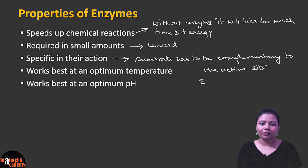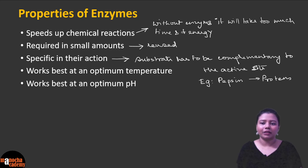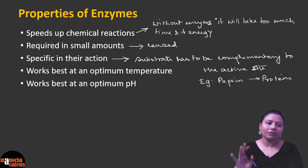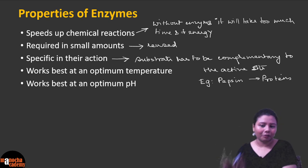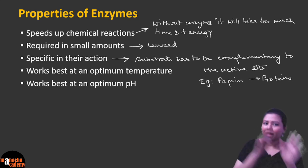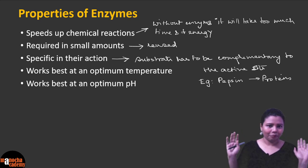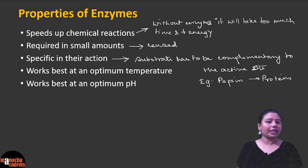For example, pepsin is a protein-digesting enzyme — it will only act on proteins. If you tell pepsin to act on fat because you haven't eaten protein today, it will say no. It is designed to act on protein, and whenever protein is present it will act; otherwise it will wait. So enzymes are very specific in their function.